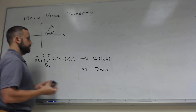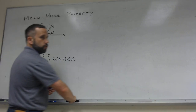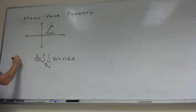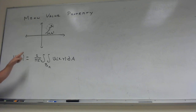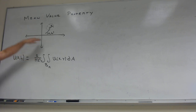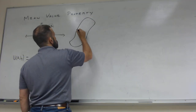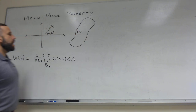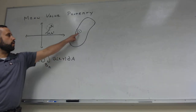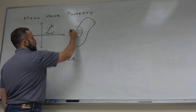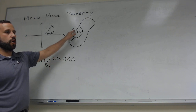If U is harmonic, we don't have to wait until R goes to 0. If U is harmonic, then U of (A, B) is equal to its averages over any ball, as long as that ball is contained in omega and U is harmonic on omega. If I compute the average of U on a disc inside omega, it will equal U at the center point. It doesn't work if the ball goes outside of the domain.